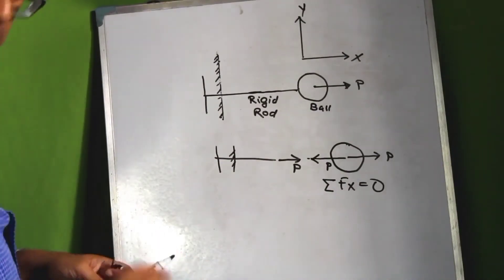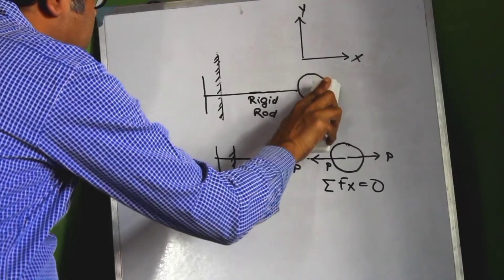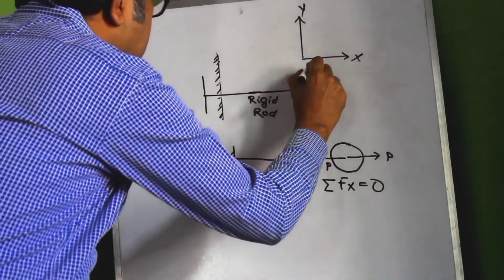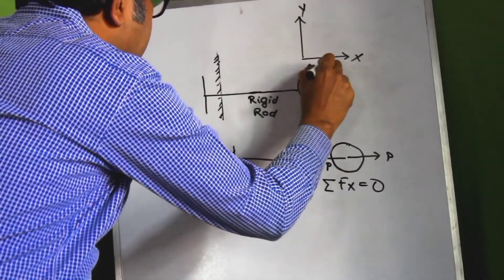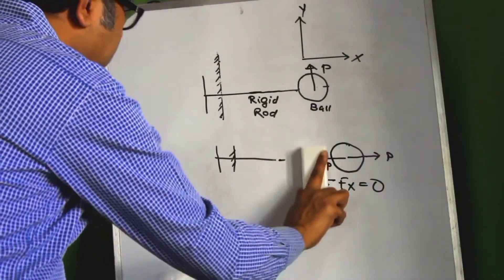So this results in this condition, and as a result the ball is in equilibrium. Now if we consider this force to be in the vertical direction acting along the Y, what would happen? The free body diagram would change.